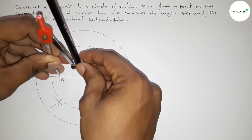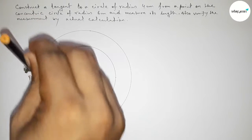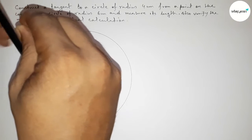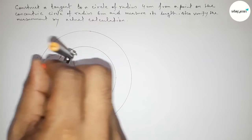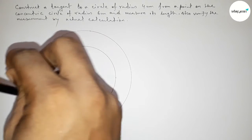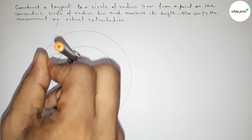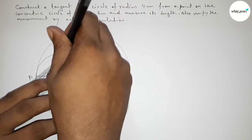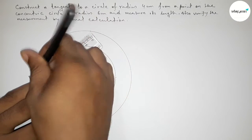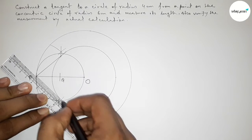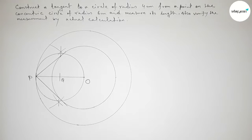Next, we draw a circle with center Q passing through both points P and O. Taking the length QO (which equals QP), we draw the circle. This circle intersects the inner circle of radius 4 centimeters at two points. Joining those points to P gives the two tangents from point P to the inner circle.